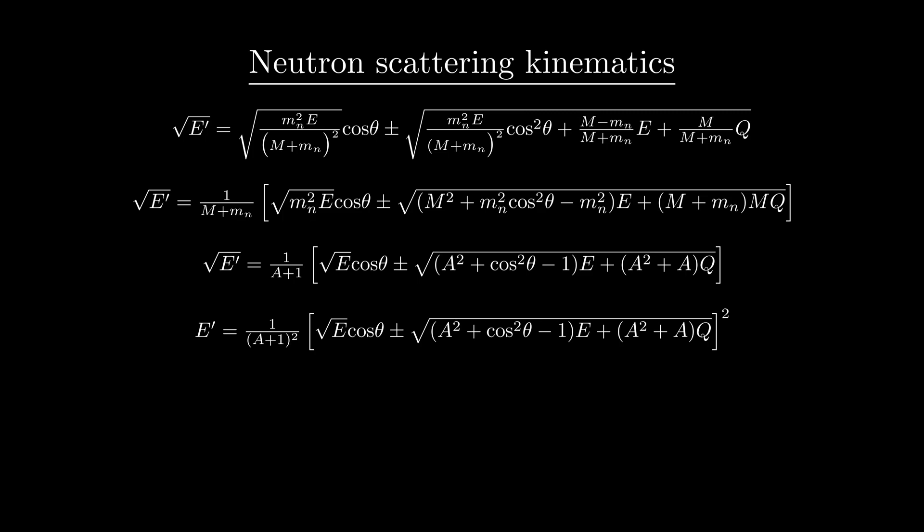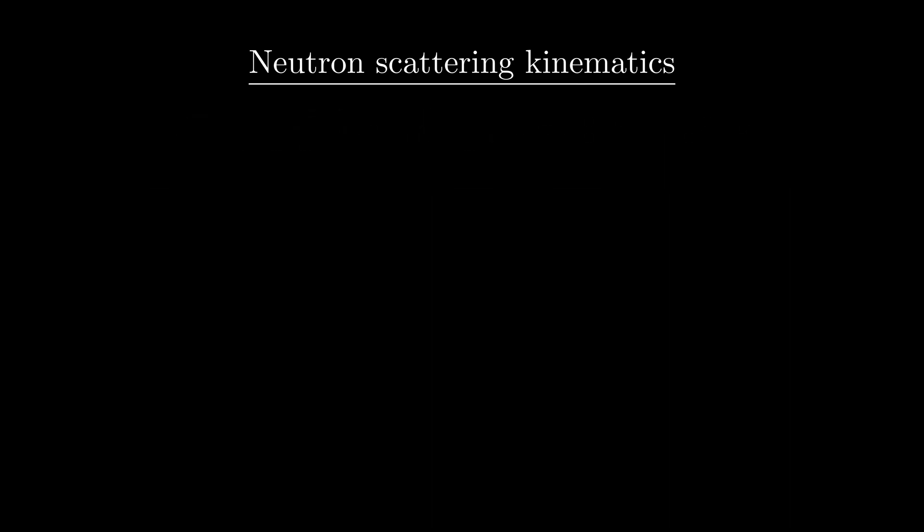Let's look at how changing the mass of the target and the angle of scattering affects the outgoing neutron energy. When I was studying neutron scattering in school, one thing that really helped me understand the kinematics of this problem was my professor plotting the angle of scattering as a function of the outgoing neutron energy. So let's do that. If we rearrange our formula to solve for the cosine of the scattering angle, we get the following expression.